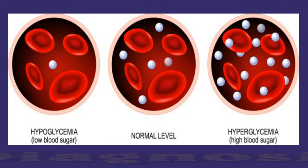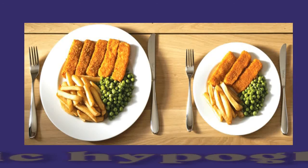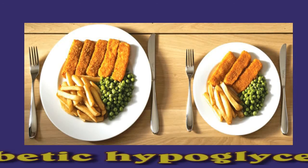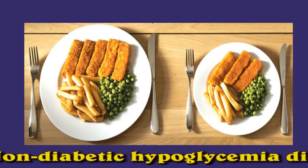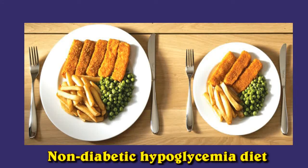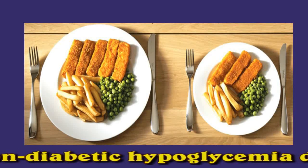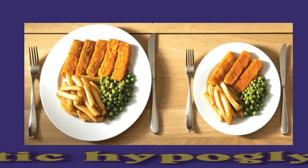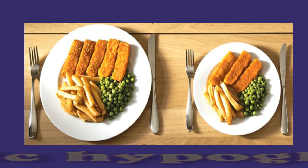The doctor may use other tests to determine the underlying cause of low blood sugar. A non-diabetic hypoglycemia diet can help keep blood sugar levels balanced. Tips to help prevent hypoglycemia include: eating small meals regularly rather than three large meals, eating every three hours, eating a variety of foods including protein, healthful fats, and fiber, avoiding sugary foods, and carrying a snack to eat at the first sign of hypoglycemia. Ultimately, the best way to prevent hypoglycemia is to identify and treat the underlying cause.